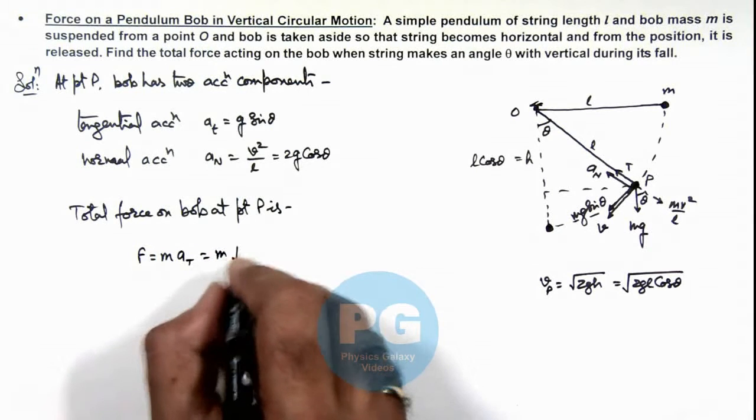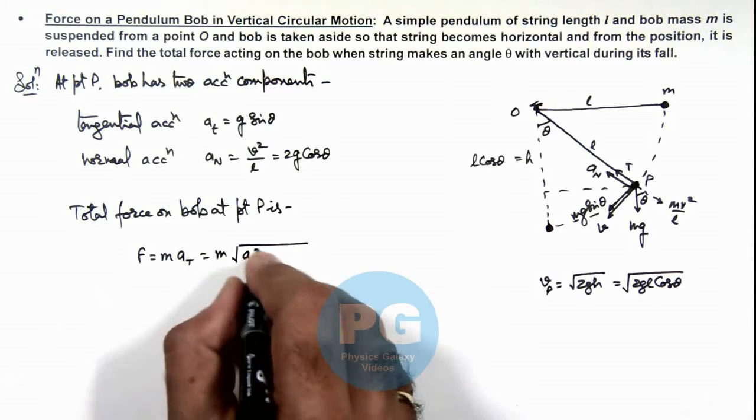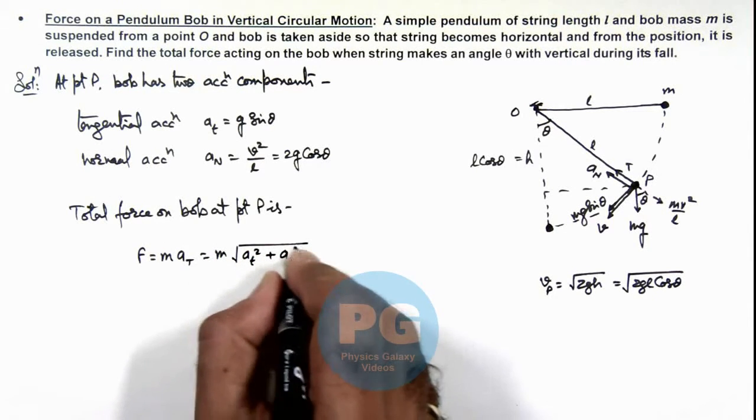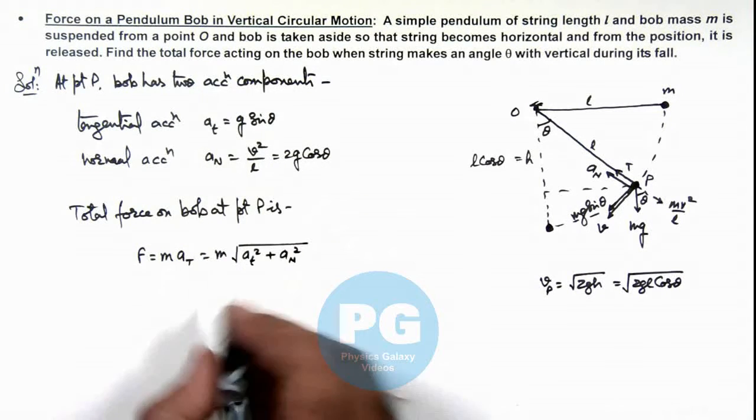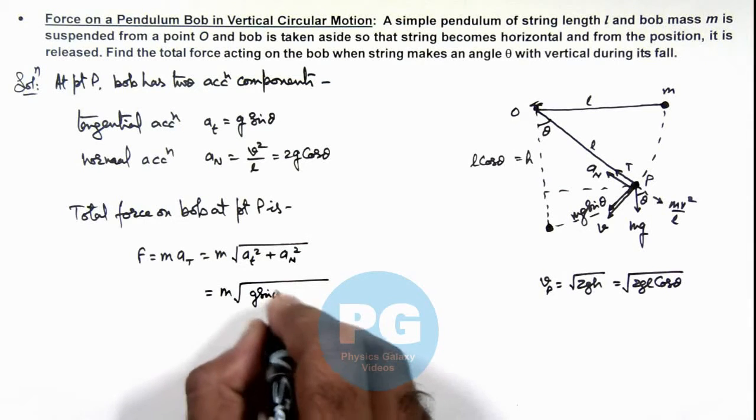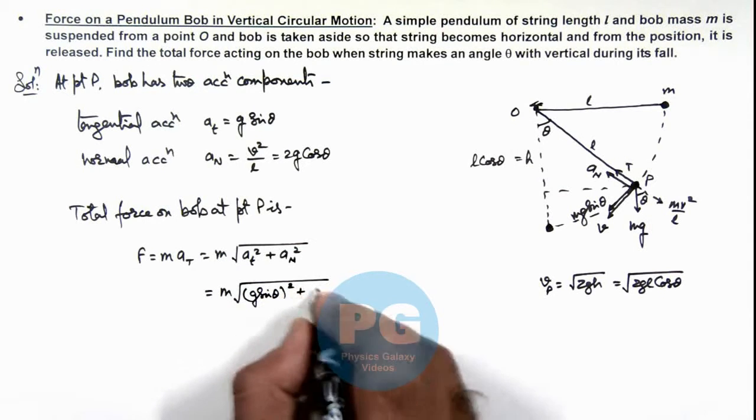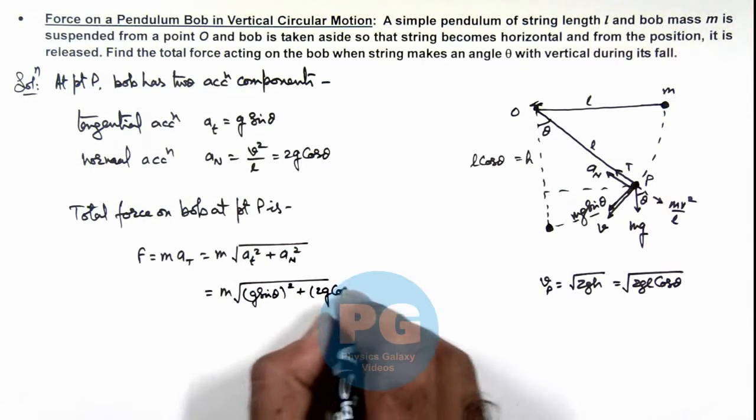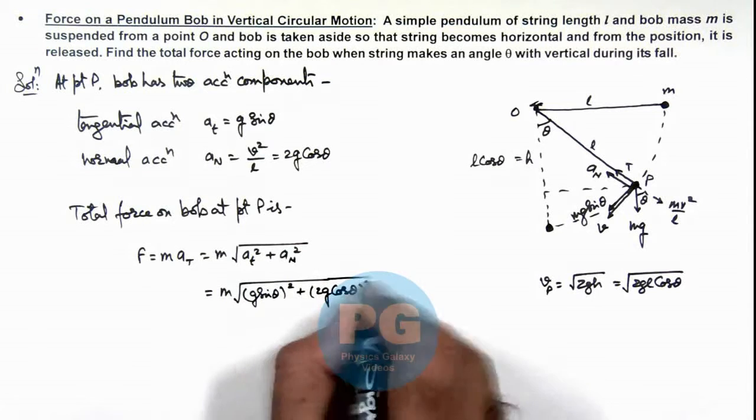So we substitute these values. It'll be m root of g sin theta whole squared plus 2g cos theta whole squared. This is the resulting value.